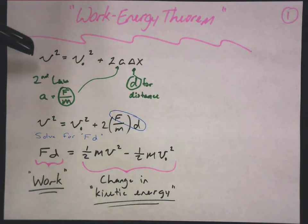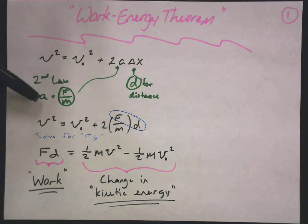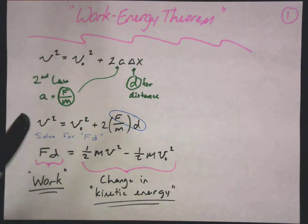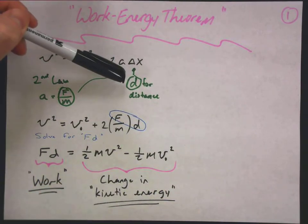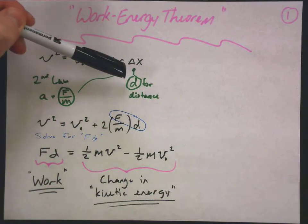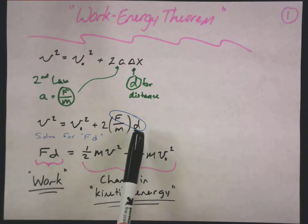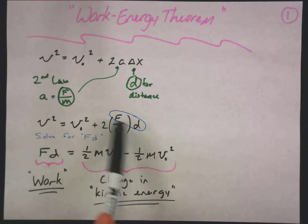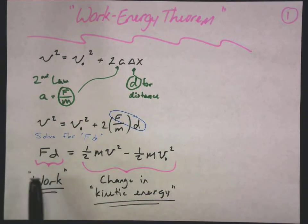Starting with the equation from kinematics relating velocities, acceleration, and displacement, Newton's second law relates the acceleration of an object to the force and the mass of that object. With a quick substitution for acceleration — and typically this is rewritten with a D for distance — we end up solving for force times distance, which is work.